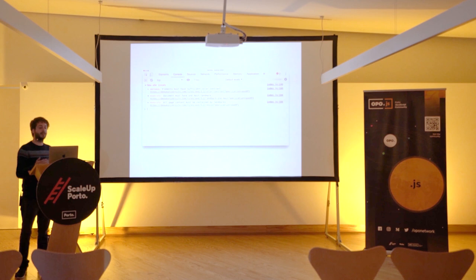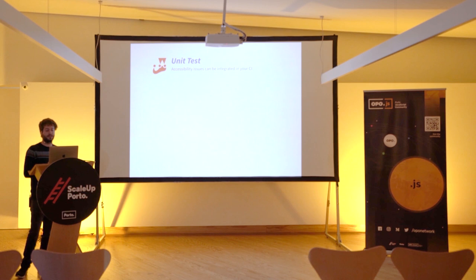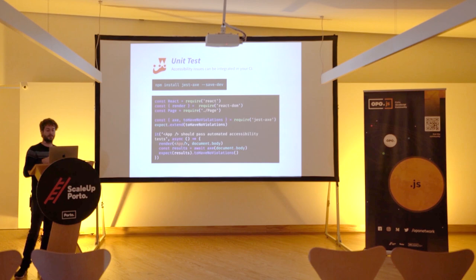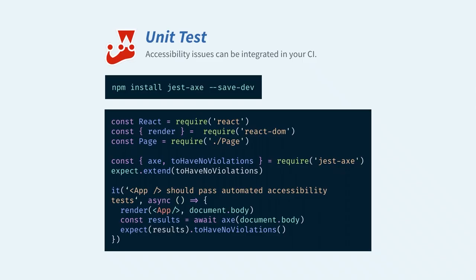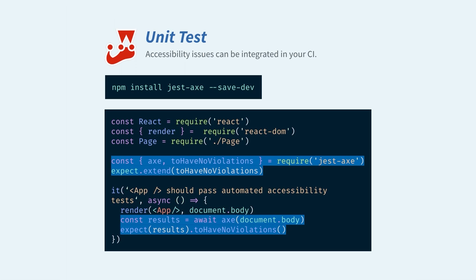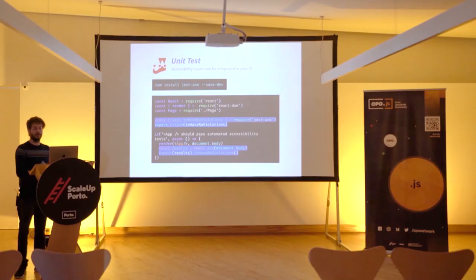You can also integrate axe-core with Jest in your CI pipeline. There's a Jest plugin that runs axe-core. You install it and use it in your tests — it's pretty straightforward if you already use Jest.